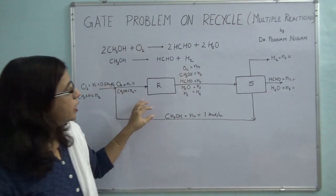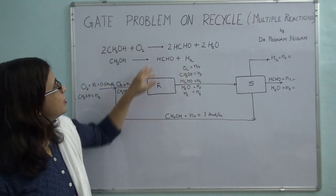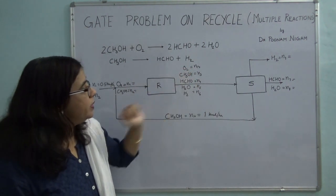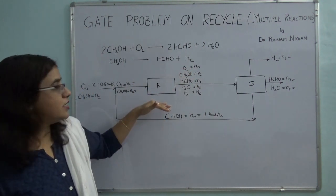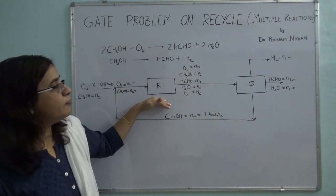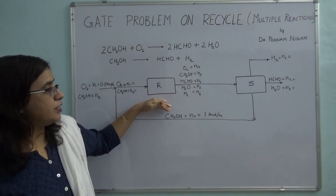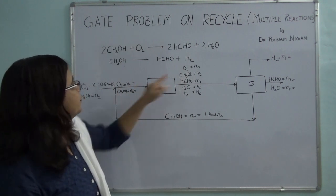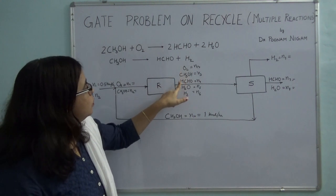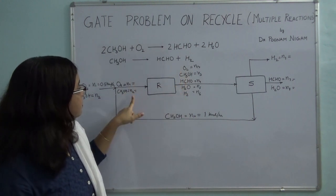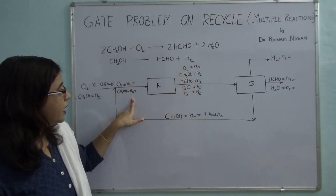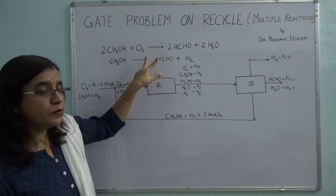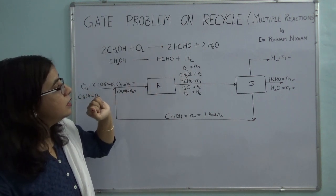Let's check the degree of freedom on the reactor. Because there are 2 reactions and many components, I will use extent of reaction. There are 7 stream variables plus 2 extents of reaction, giving 9 variables total.